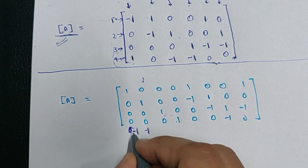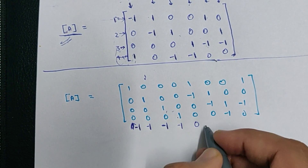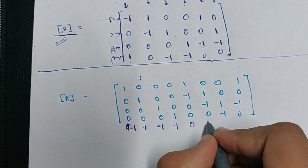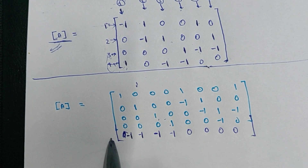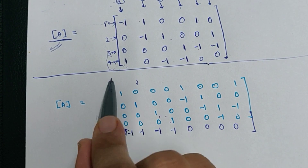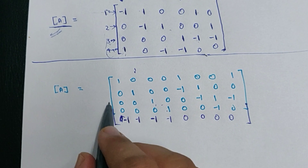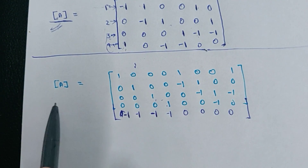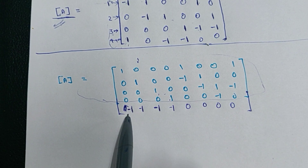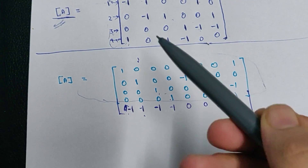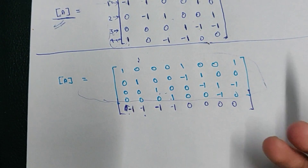Also -1 here — the sum is becoming zero, so there is no problem. Similarly, zero here because the sum is already zero — we don't need to do anything, so we just place it as zero. Now this is our complete incidence matrix. We added this row to make every column's sum equal to zero. Now we have to draw the directed graph of this incidence matrix. In the exam, you will be given an incomplete matrix — first you make it complete by ensuring the column sums are zero, then draw the directed graph.